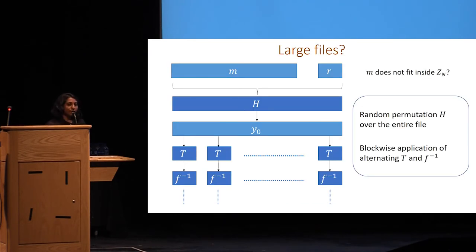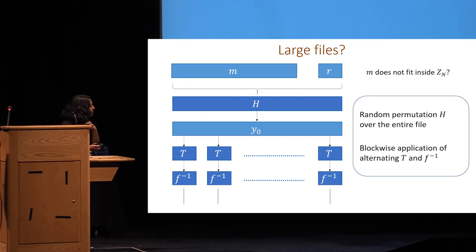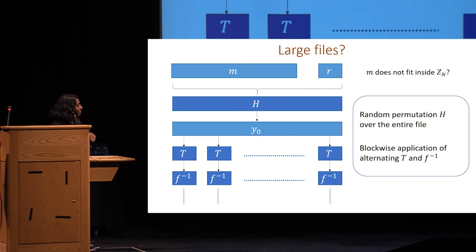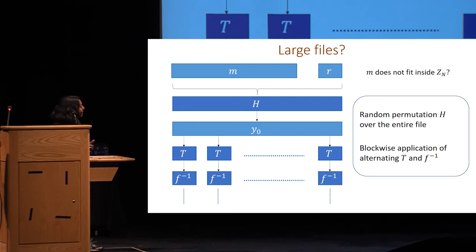For large files where M does not fit inside the trapdoor permutation or random permutation, we first apply a large random permutation H on the entire file and then apply our construction — iterating T and F-inverse block-wise. We split the output of H into multiple blocks and apply our construction to each block independently. The H applied on the entire M ensures the adversary cannot deduplicate multiple blocks occurring across different files.